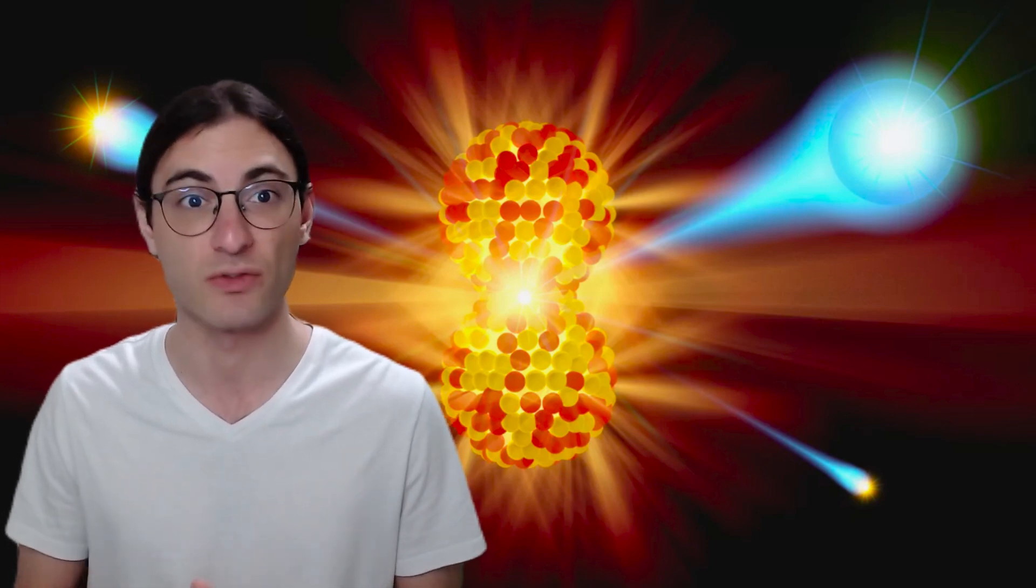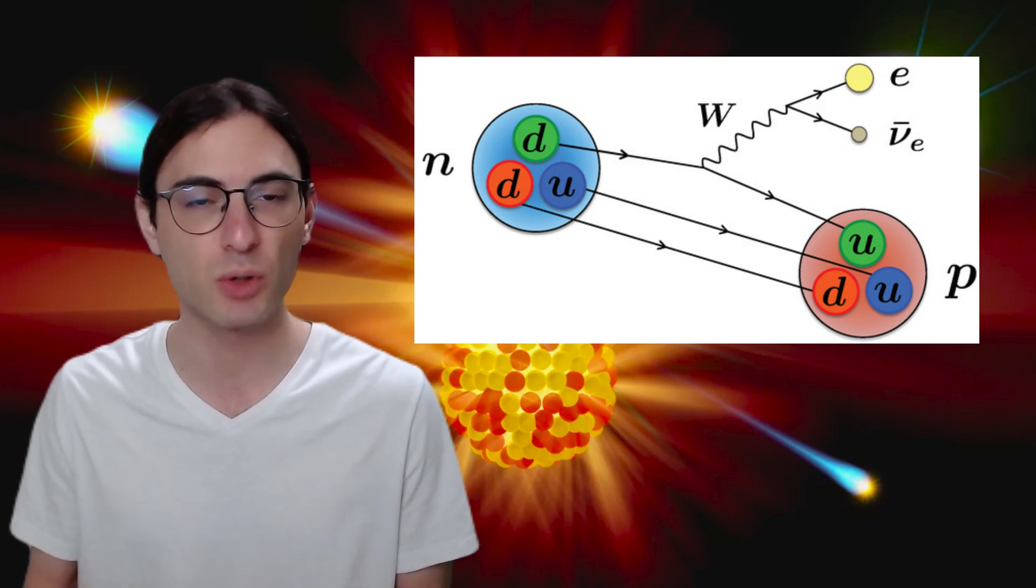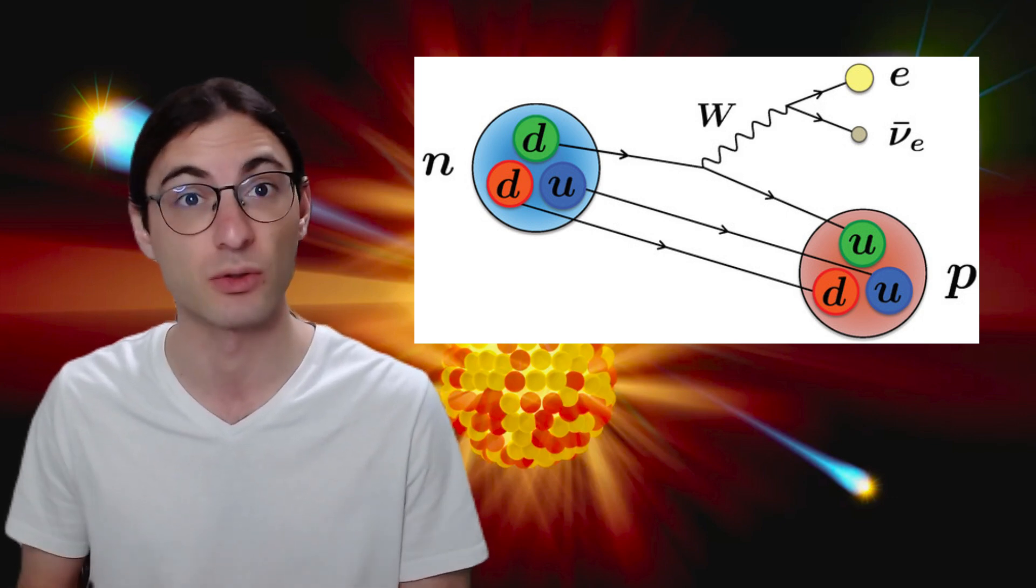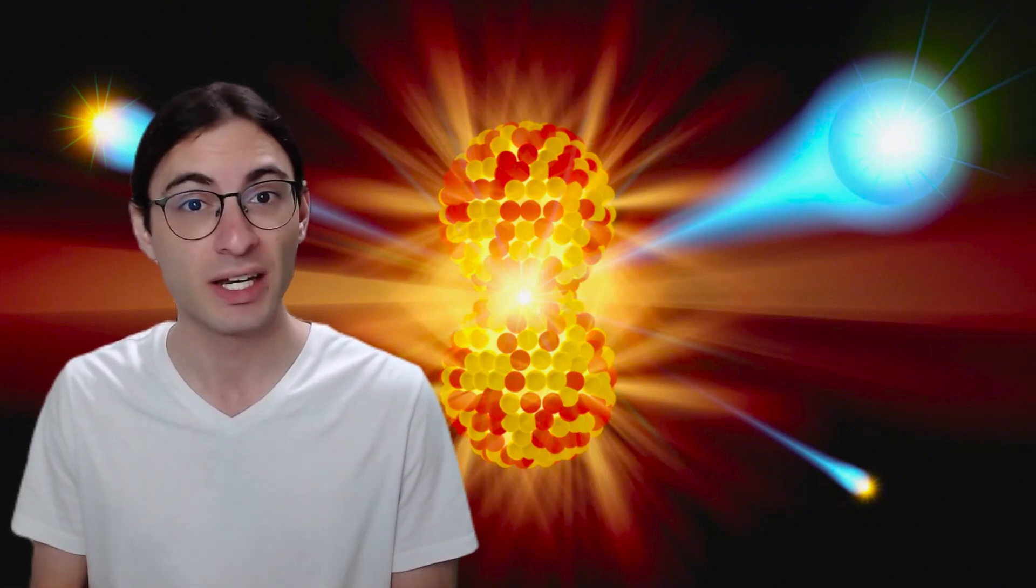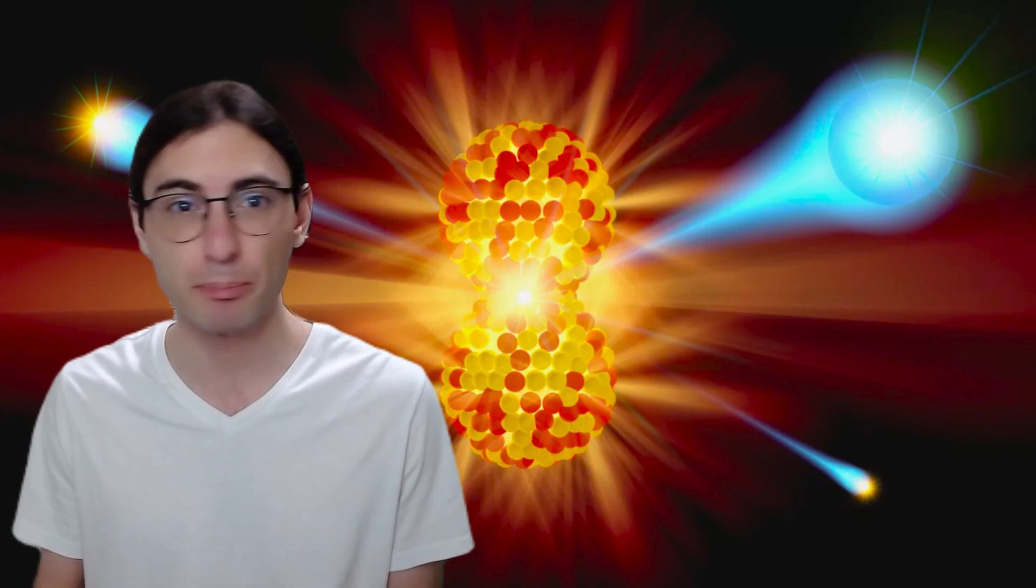And these neutrons don't last forever. Instead, they decay into a proton, an electron, and an electron antineutrino. And they last, well, half of them will decay away after about 10 minutes and 11 seconds. And I say about not because I'm rounding, but because we don't actually know what the half-life of a neutron is.